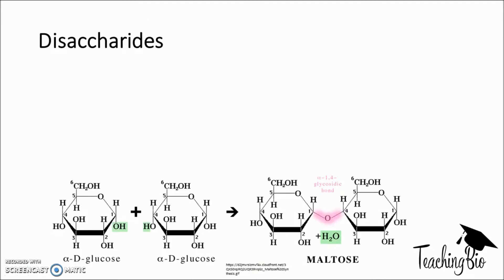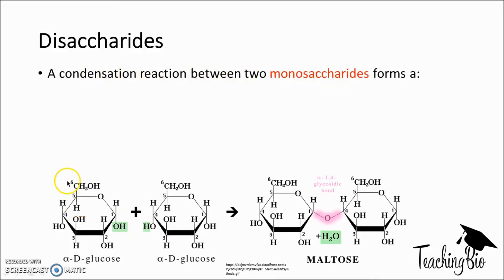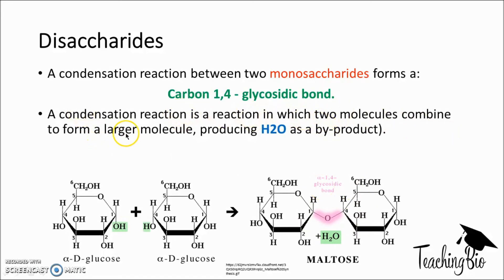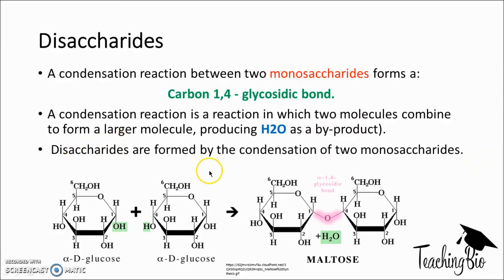Moving on to disaccharides. A condensation reaction between two monosaccharides forms a carbon-1,4 glycosidic bond - this means it's between carbon-1 and carbon-4, and the oxygen linking them is the glycosidic bond. A condensation reaction is one in which two molecules join together to form a larger molecule, producing water as a by-product. Disaccharides are formed by the condensation of two monosaccharides, with the OH and H joining and water coming off, leaving the oxygen to form the glycosidic bond. Here, alpha glucose and alpha glucose are used to form maltose.